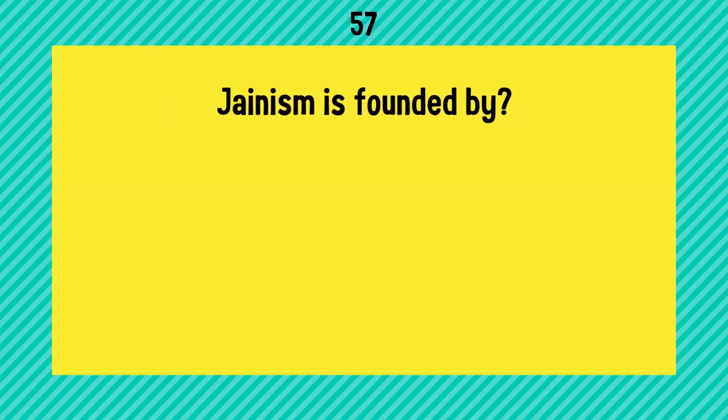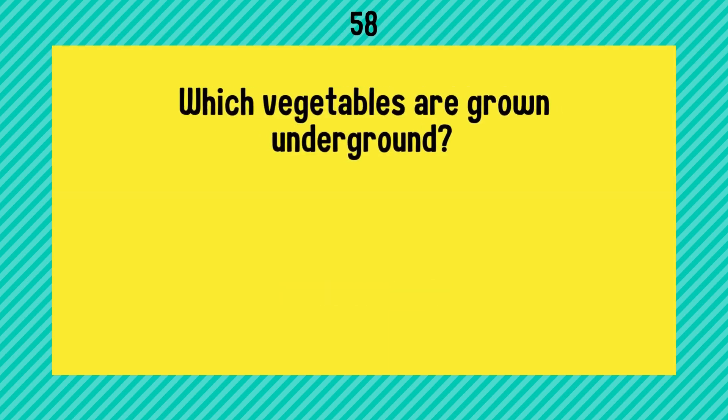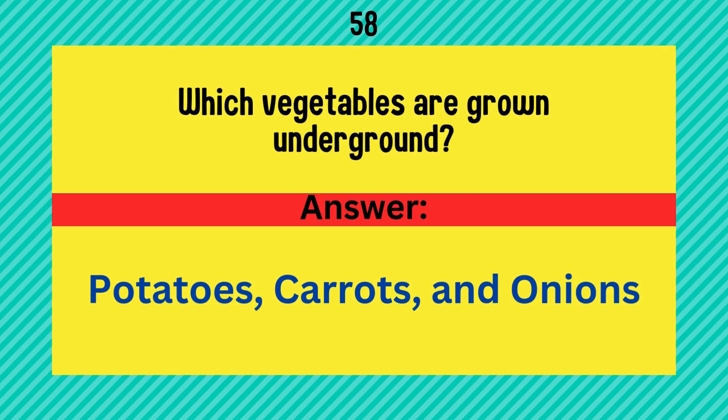Jainism is founded by? Answer is Mahavira. Which vegetables are grown underground? Potatoes, carrots, and onions.